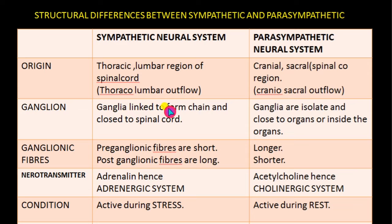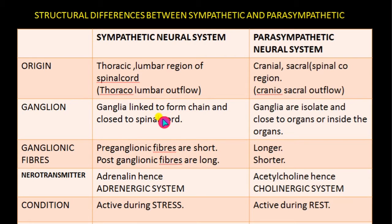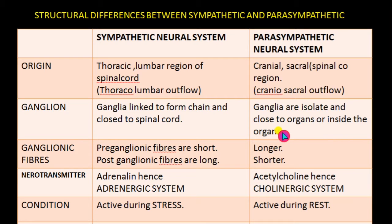The ganglia linked to form a chain and they are very close to the spinal cord. That's why these ganglia of the sympathetic neural system are known as sympathetic chain ganglia or paravertebral ganglia. The ganglia in the parasympathetic neural system are isolated — present as a single structure and very close to or inside the target organs.